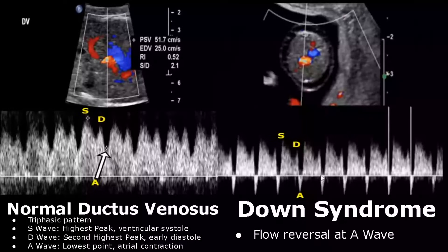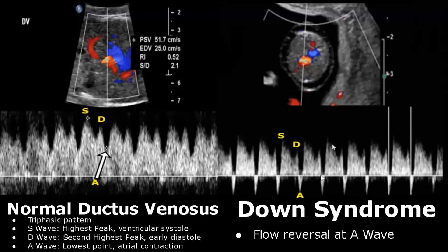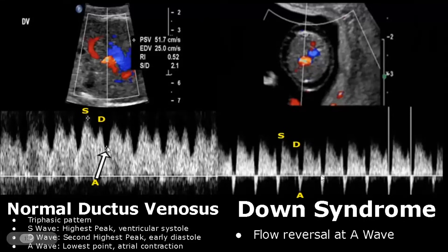A fetus with Down syndrome can have an abnormal spectral Doppler waveform of the ductus venosus. Here is a normal spectral Doppler waveform of the ductus venosus — it has a triphasic pattern. The wave with the highest peak is the S wave, occurring at ventricular systole. The D wave is the second highest peak, representing early diastole. The lowest point is the A wave, representing atrial contraction. In an abnormal waveform, we will find flow reversal at the A wave — the A wave is seen below the baseline.